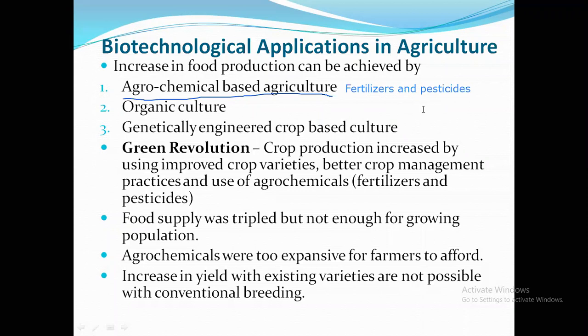But before that, what was it? It was organic culture. Organic culture means no chemicals are used — it is a very traditional method of agriculture. Instead, natural fertilizers such as cow dung or manures were used, or they used nodulated plants to incorporate nitrogen. These are natural, organic methods.